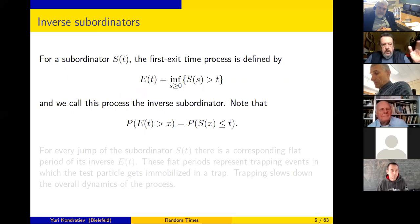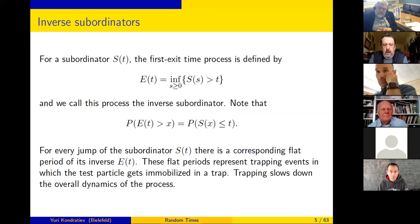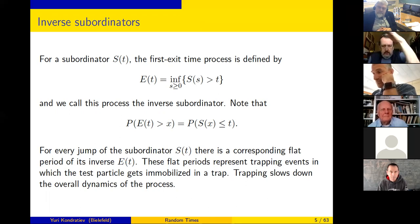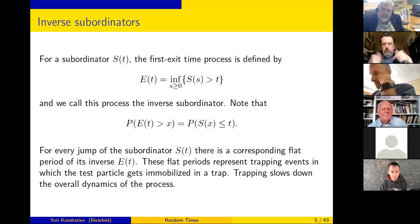A more interesting situation arises when you consider the so-called inverse subordinator, which is formally the inverse function of the subordinator. The crucial point is that the inverse subordinator is not Markov. Moreover, each jump of the subordinator produces a constant value — a flat period — of the inverse subordinator.